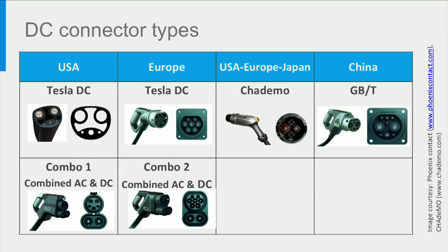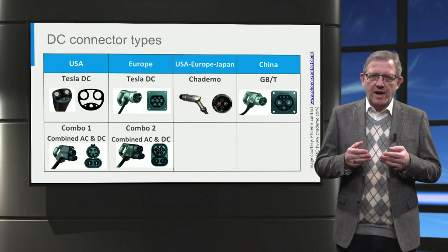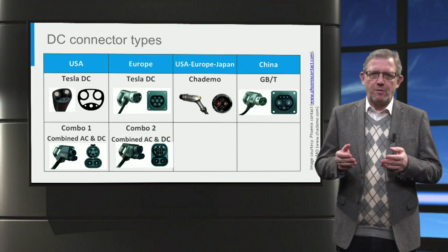In terms of DC charging, the CHAdeMO Type 4 connector is used by Japanese car manufacturers globally, while American and European car manufacturers have adopted a combined AC-DC connector called the combined connector combo. Interestingly, Tesla uses the same connector meant for AC charging for DC charging as well. In the case of China, they have their own DC connector. The conclusion is that the electric vehicle industry has not agreed on one specific connector, so depending on the car brand, country, and whether it is AC or DC charging, the connector varies in shape, size and pin configuration.